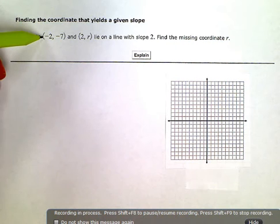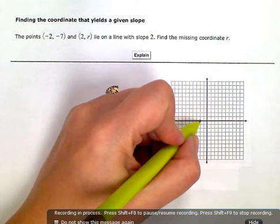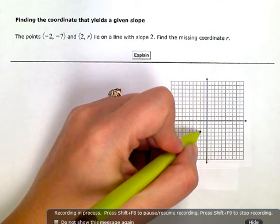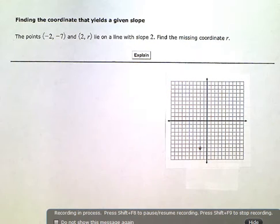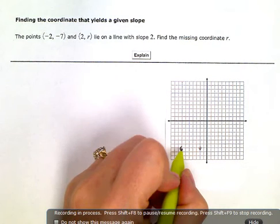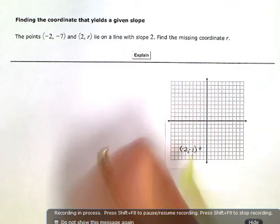So I have a point at (-2, -7). Negative 2, then down 1, 2, 3, 4, 5, 6, 7. Negative 7 is right there. I'm going to label this (-2, -7) so I remember that.